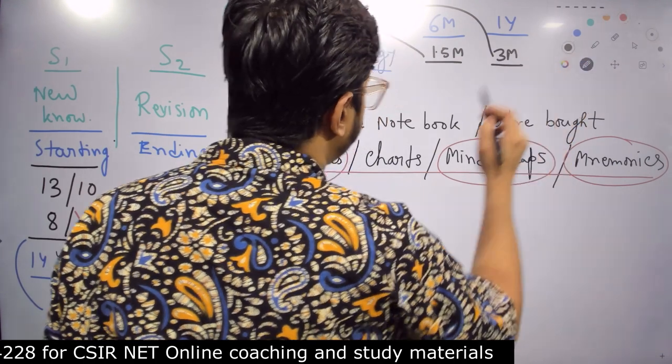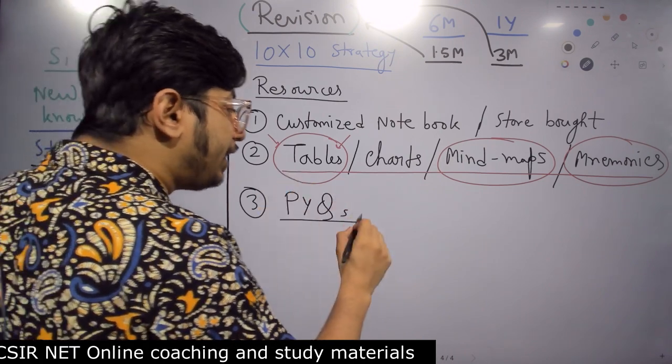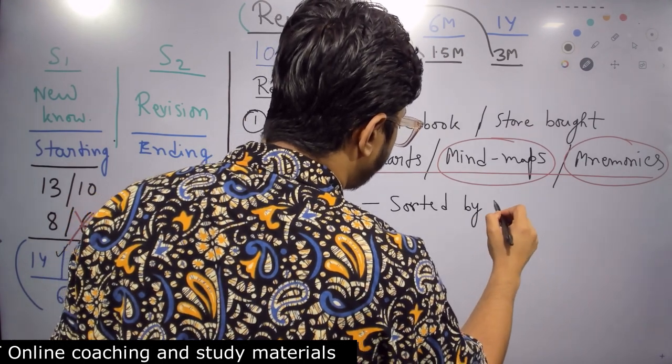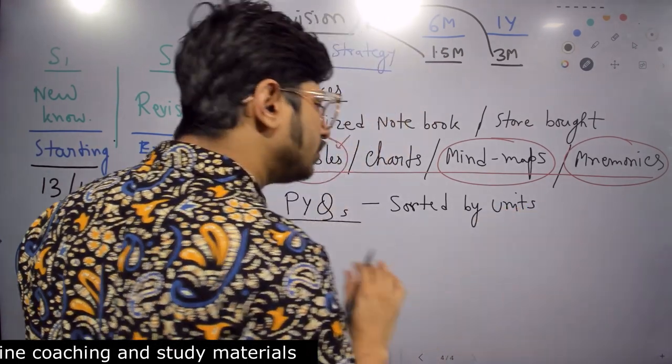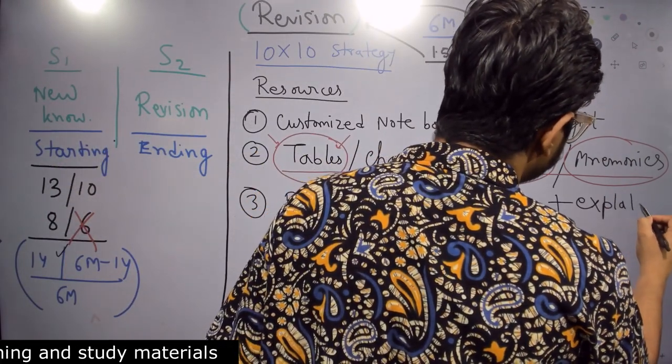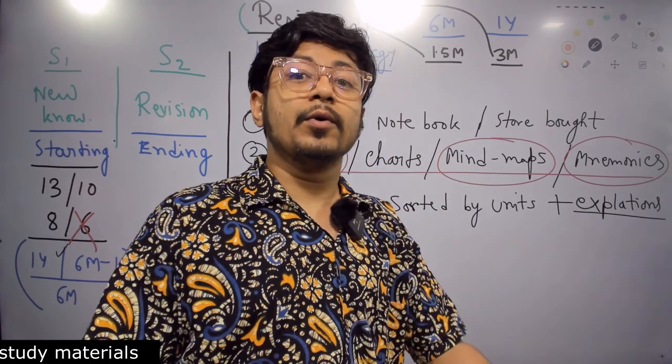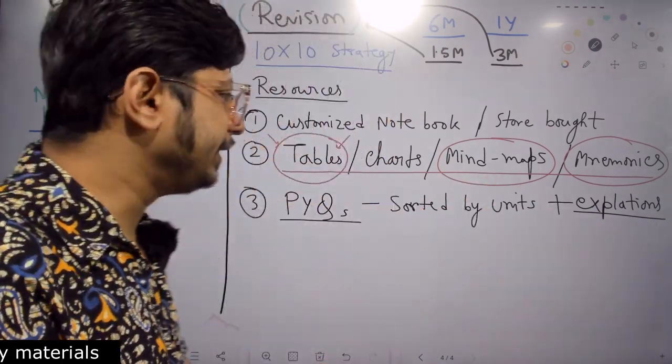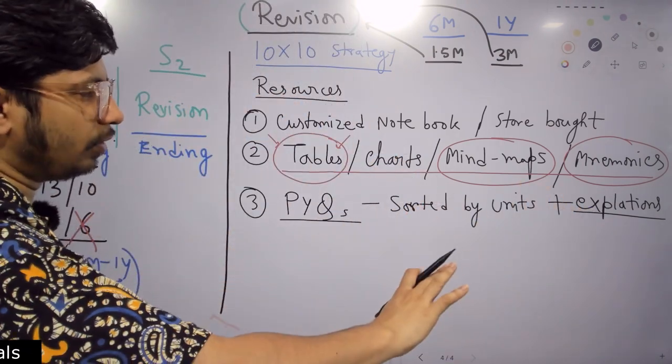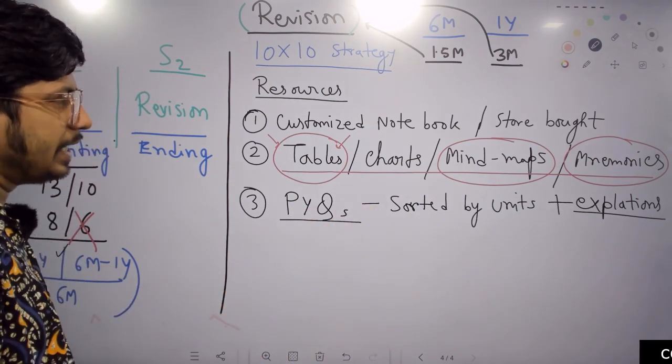And the third resource that you need for preparation are previous year's questions, PYQs, if possible sorted by unit. If not, then only the previous year's questions. If possible with explanations - we at Shomo's Biology also provide that NET Set Go book with previous year's question papers with answers with written explanations. You might need that. If not explanation, then only the previous year's questions. Sorted by unit would be good, better. You need these three resources.